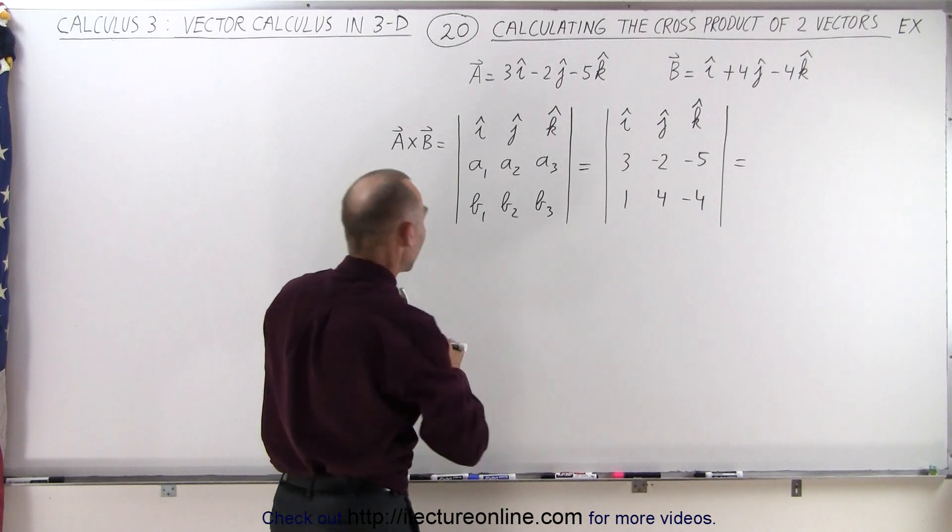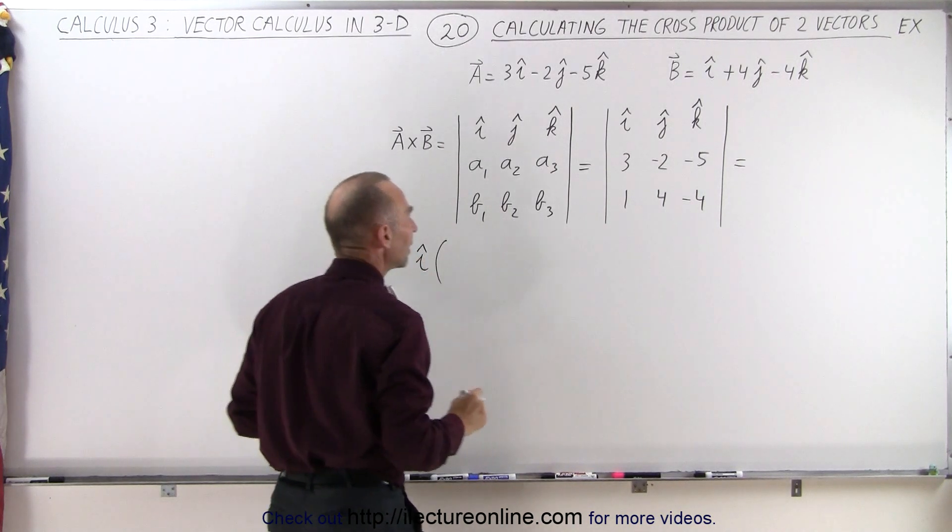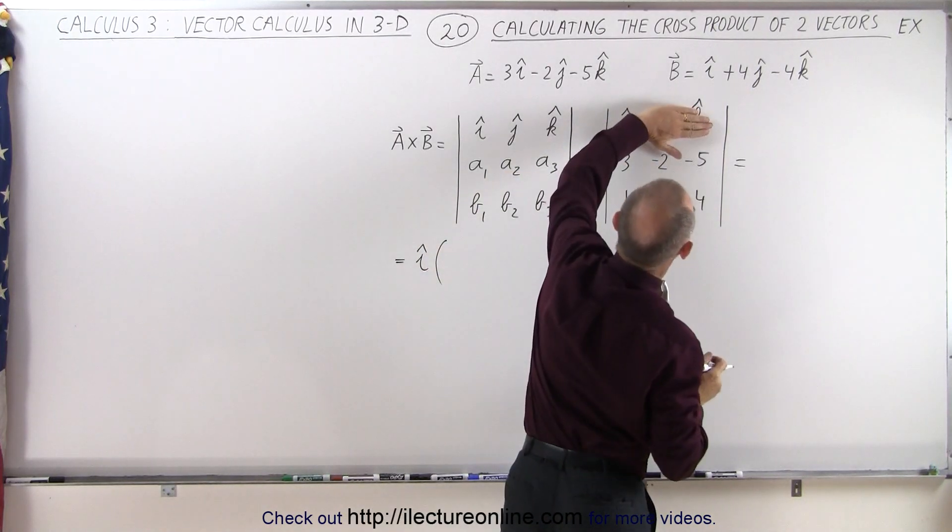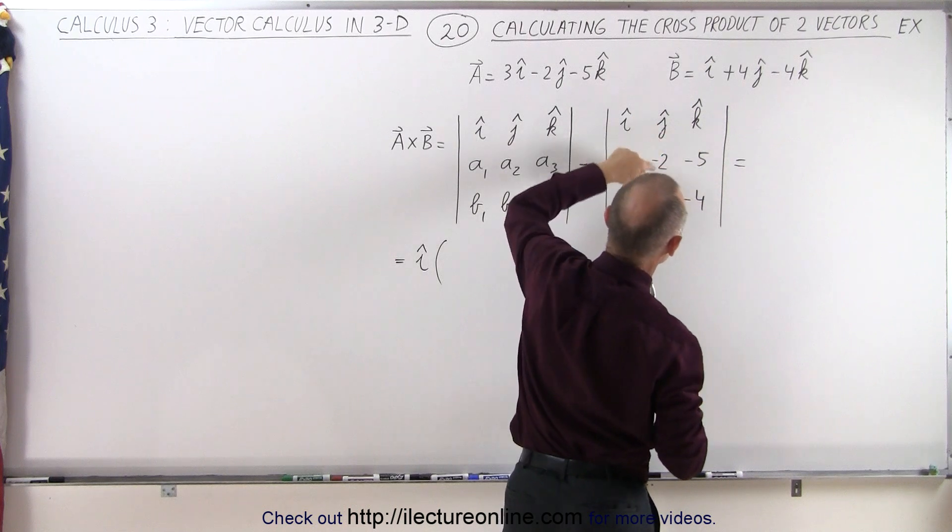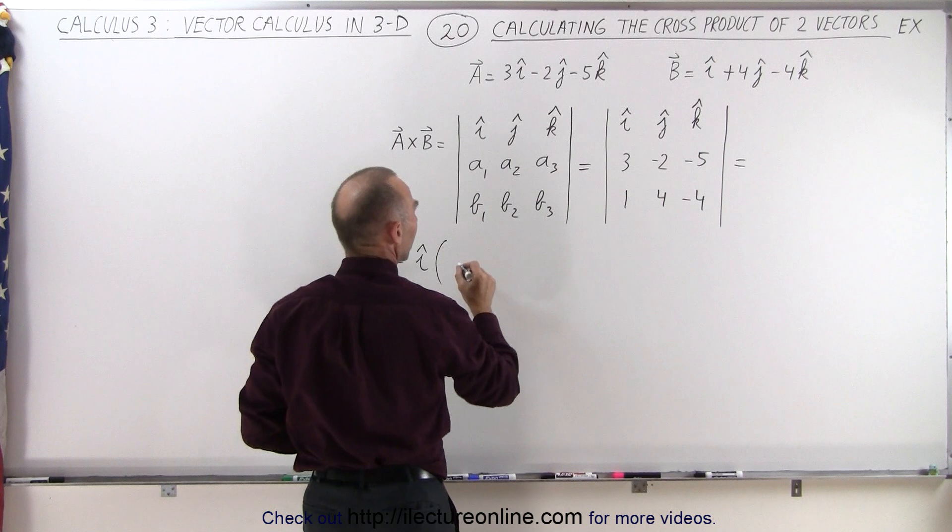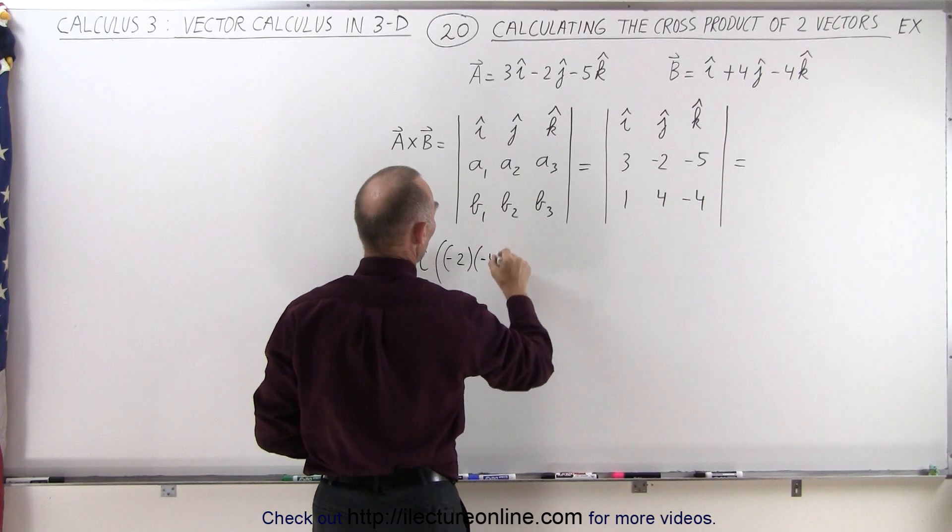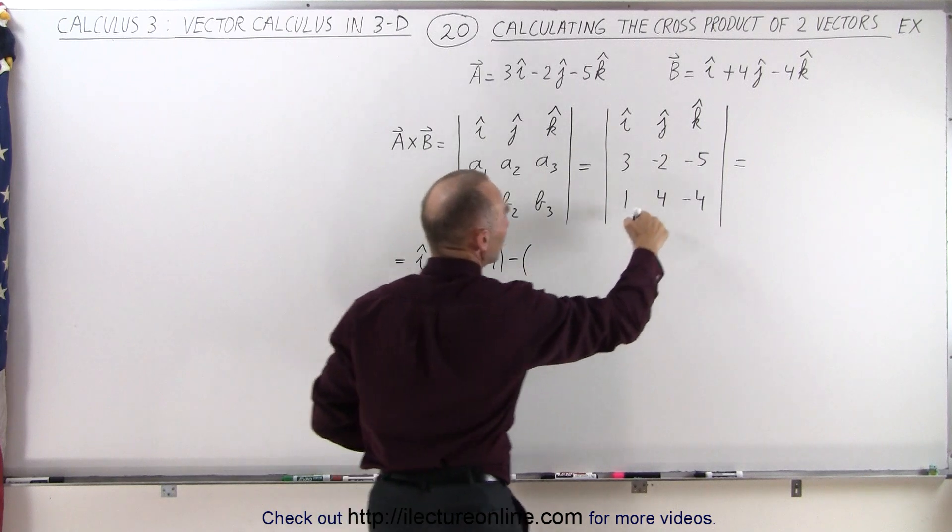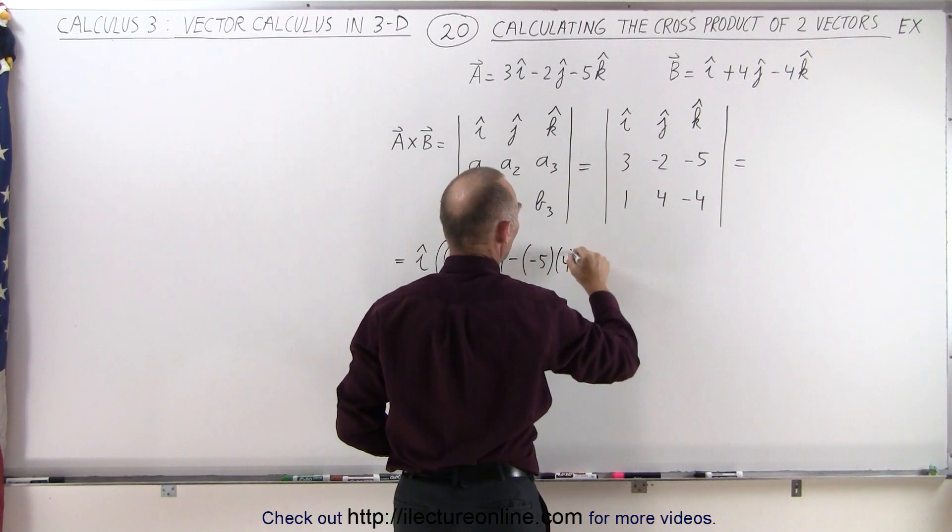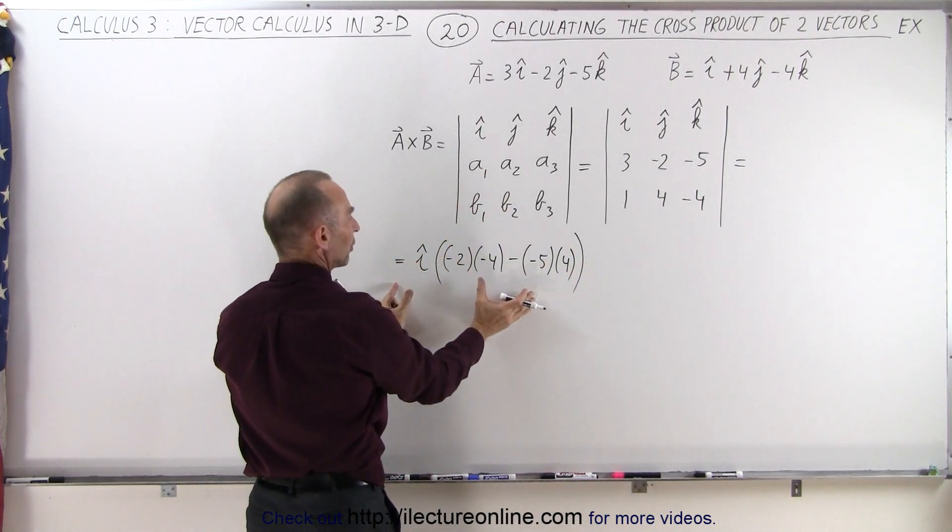And so this now becomes the following. This is equal to the i unit vector times, again, you get rid of this column and this row which leaves you these four elements. You multiply these two together and subtract when you multiply these two together. So this becomes minus 2 times a minus 4, subtract from that when you multiply these two together which is a minus 5 times a positive 4. There you go. So that gives you the first component of the cross product.